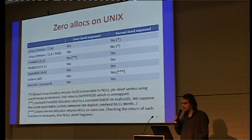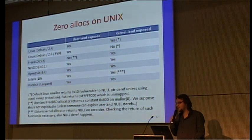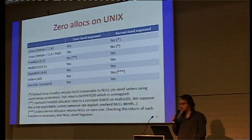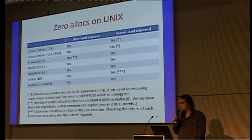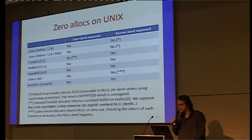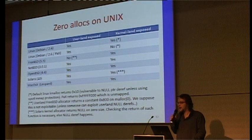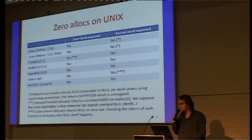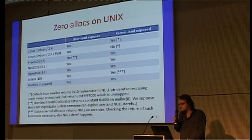For Linux, same behavior. Linux with PaX has the same behavior except for kernel land. PaX introduced a nice mitigation: by default kmalloc returns 0x10, which is vulnerable to null pointer dereference if you map the null page. With the PaX patch from GRSEC, this value is changed to 0xFFFF0000 — the address of the first byte of the last page of the address space. Whenever you touch that pointer, the page is unmapped, so you just crash the kernel and cannot exploit anything.